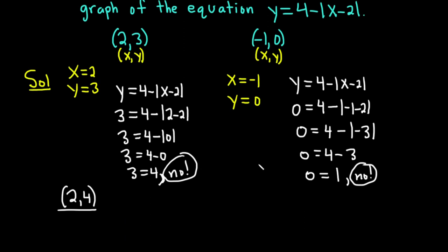So again, writing down our equation, we have y equals 4 minus the absolute value of x minus 2. So in this case x is 2 and y is 4. So we have a 4 here and this is equal to 4 minus the absolute value of 2 minus 2.